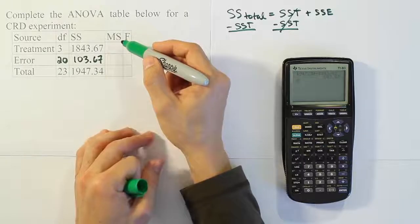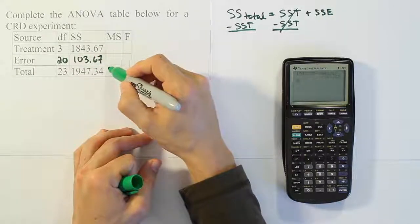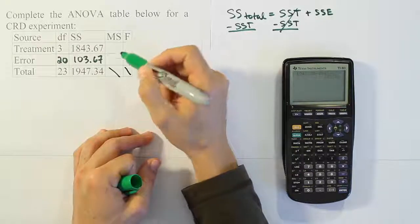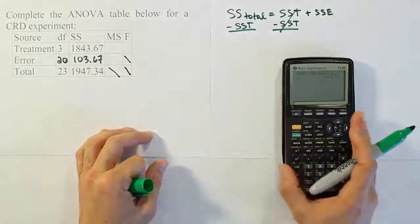Now to get the MS values, what we want to do is get the MST and the MSE values. Remember, we do not need to fill in these three boxes here, we just need to fill in the remaining three that we see left after that.